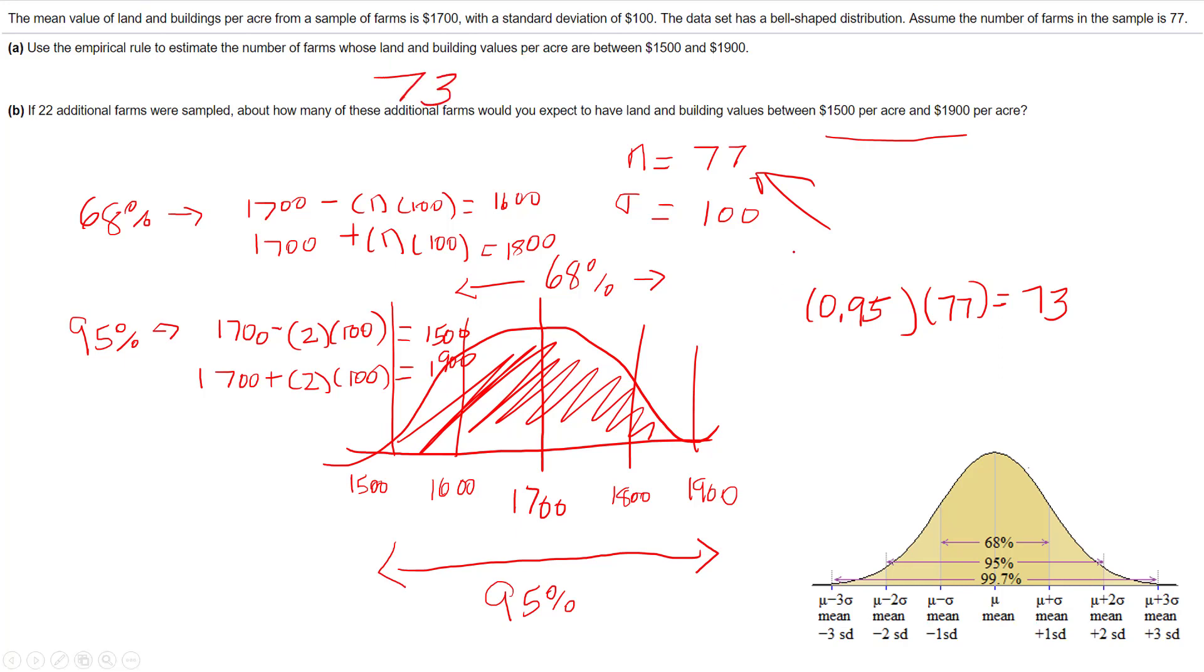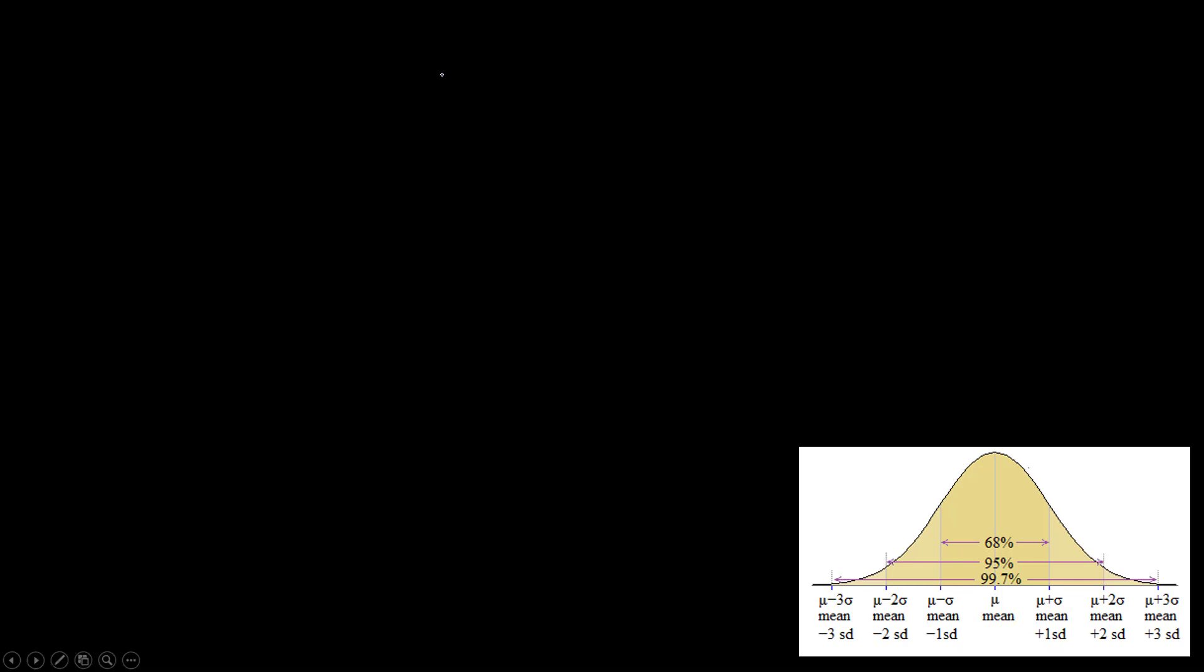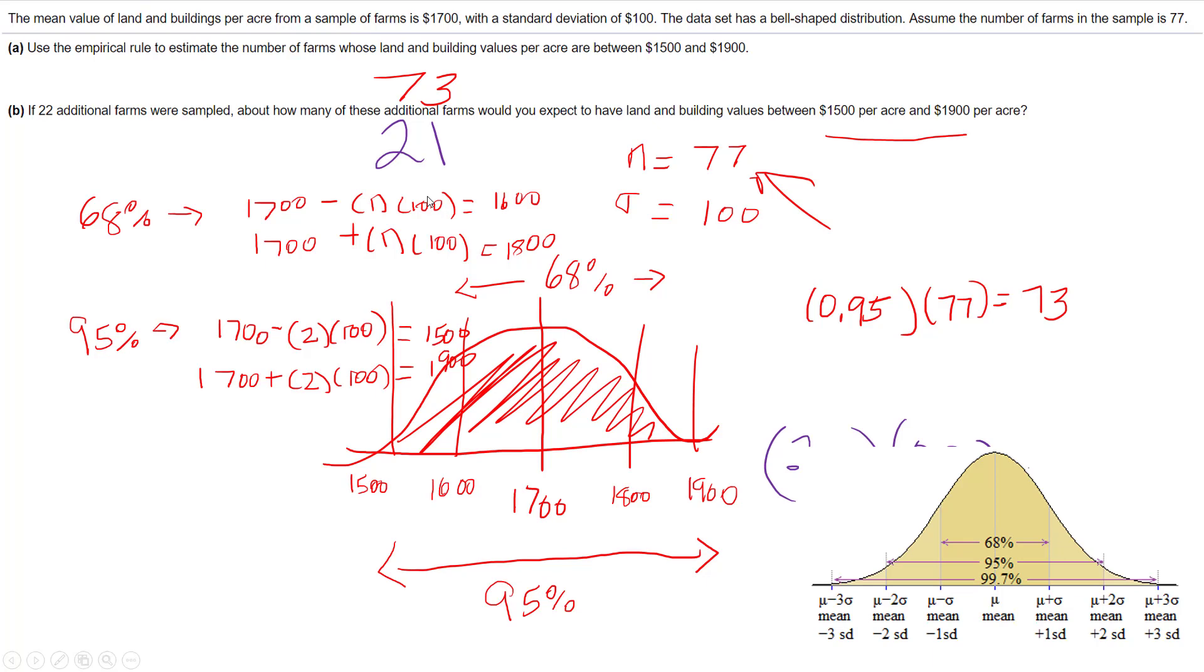Now it says if 22 additional farms are sampled, how many of these additional farms would you expect? Well, it would still be 95% of those, so if you multiply that out, you get 20.9, or about 21.